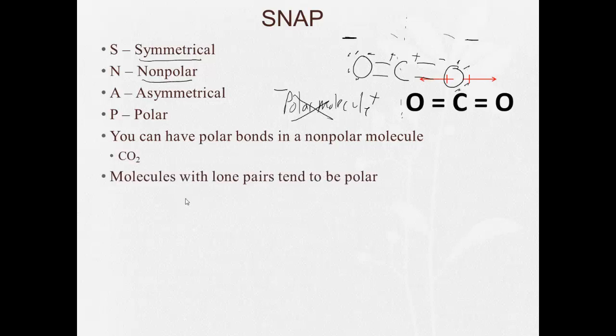Molecules with lone pairs will tend to be polar. Here we have NH3. We have N, H, H, H, and here's a lone pair.